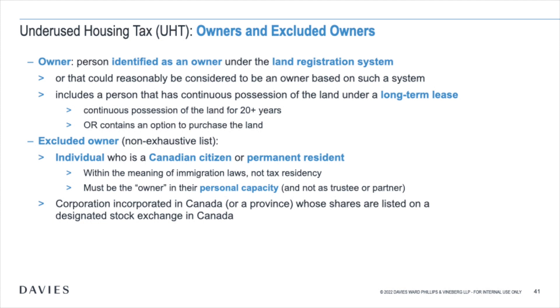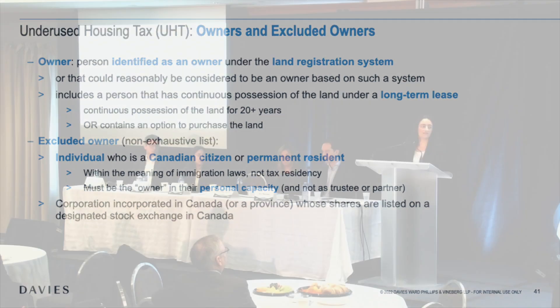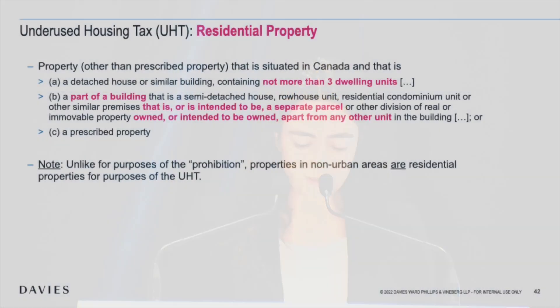One important note: if a Canadian individual is an owner as a partner or trustee, they are not an excluded owner. Residency here means permanent residency under immigration laws, not tax residency. The residential property definition is very similar to the foreign buyers ban definition. One important difference: properties in non-urban areas are still residential properties for UHT purposes, unlike under the prohibition. If you want to claim the vacation property exemption, you still have a filing obligation.